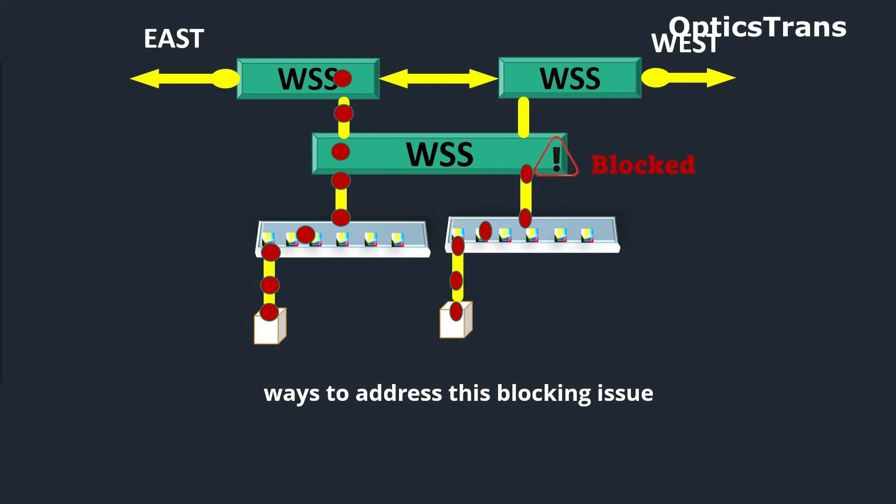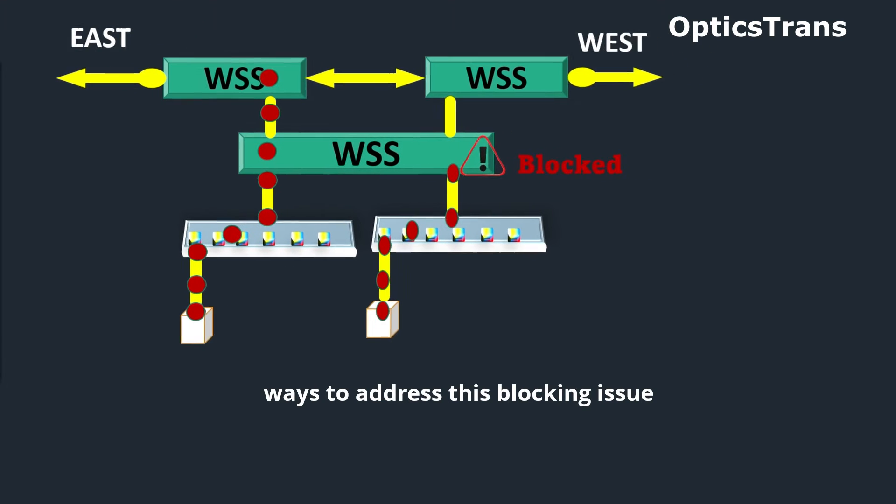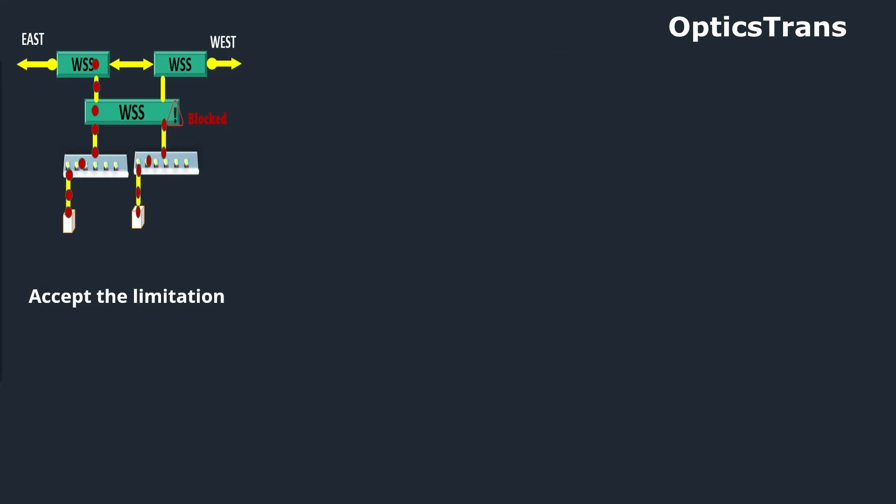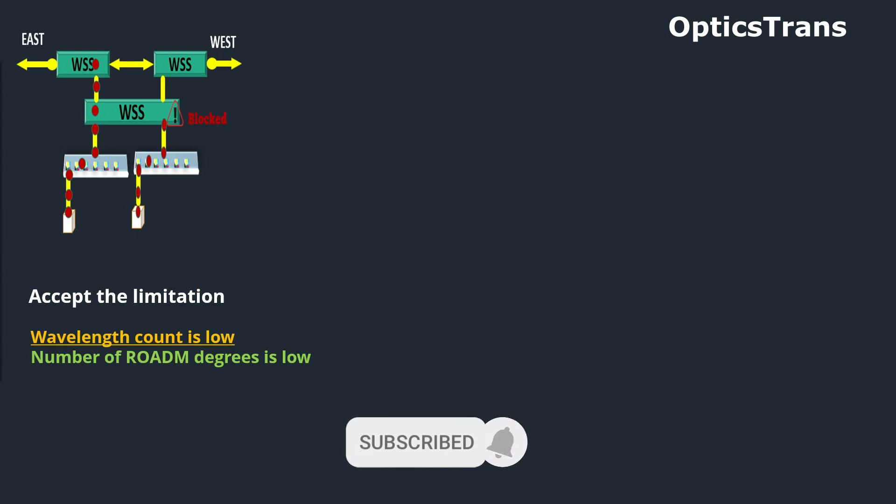So while doing planning or in field, there are a few ways to address this blocking issue. The most common is just accept this limitation. In cases where the wavelength count is low and the number of ROADM degrees is low, the likelihood of facing a blocking issue is low, and simple directionless architecture is sufficient and more cost effective.